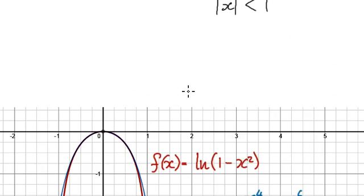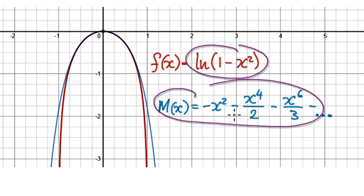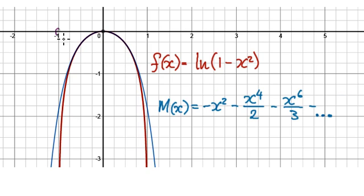If you get a graph plot, the red line here represents our original function and the blue line represents our Maclaurin series. Take it all the way to infinity and slowly this blue line will map on top of the red line. Remember, it's only valid in between negative 1 and 1.